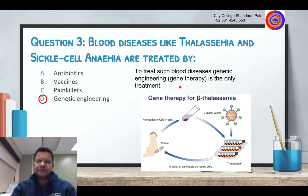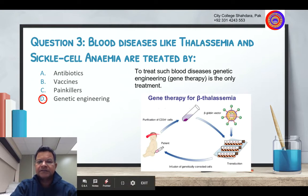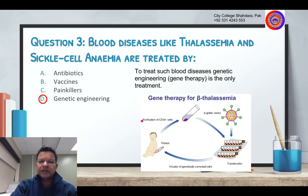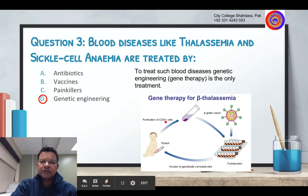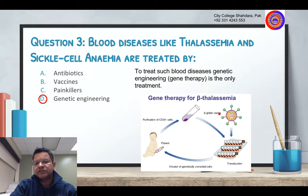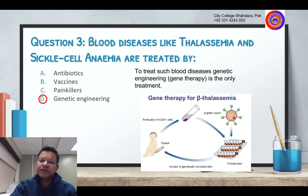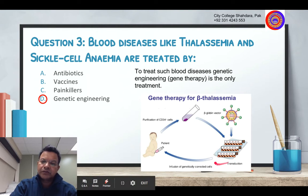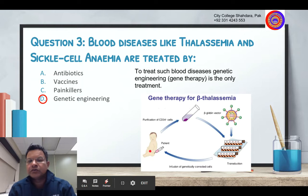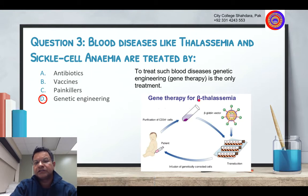So to treat such blood diseases, genetic engineering — specifically gene therapy — is the only final treatment. For beta-thalassemia, what we do is take blood, purify the cells, and work with the beta-globin genes. We will study about that more in detail.